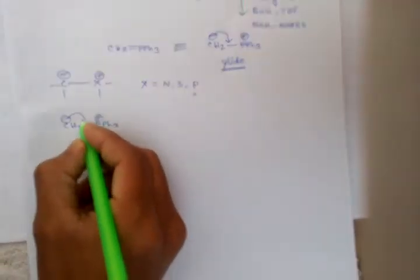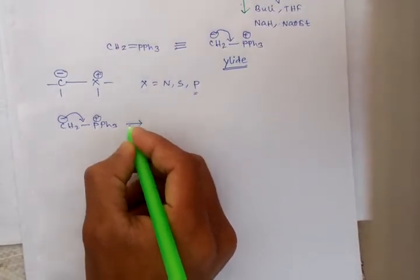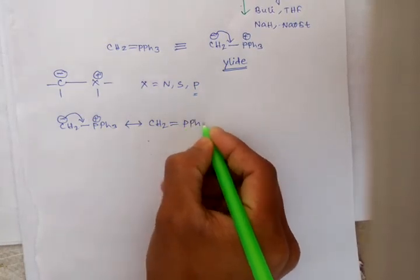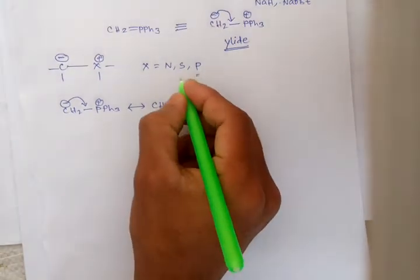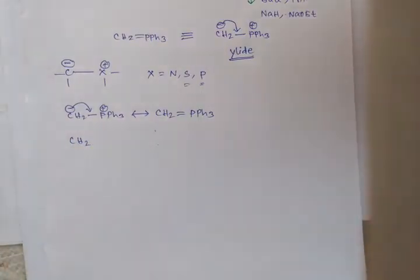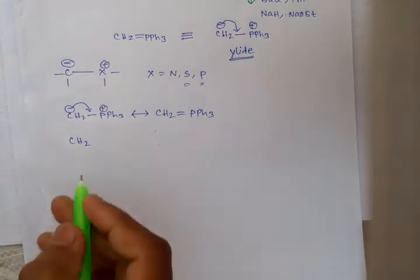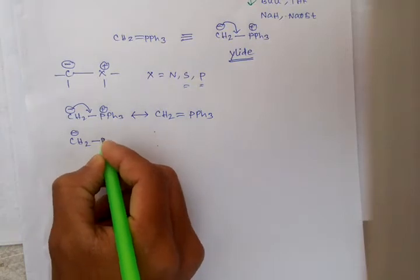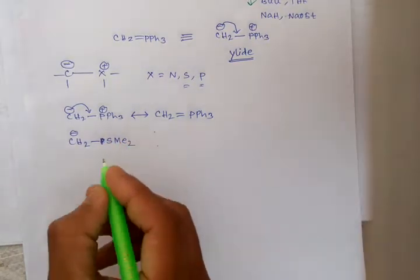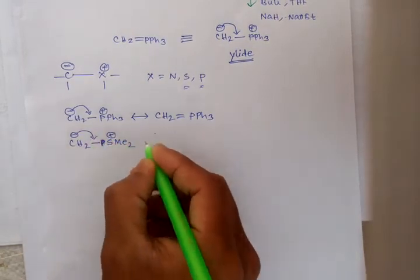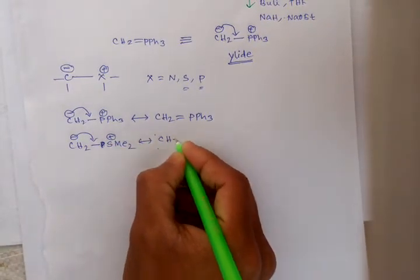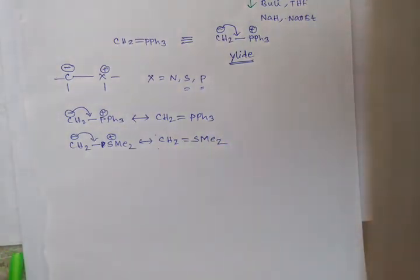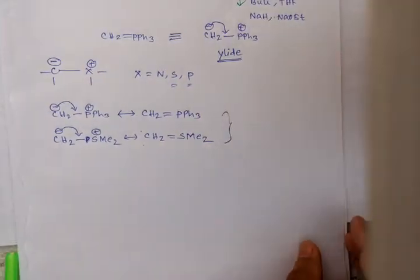For phosphorus ylide, the negative charge goes here to form resonating structure PPh3. For sulfur ylide, the negative charge comes here. Both structures are resonance stabilized.